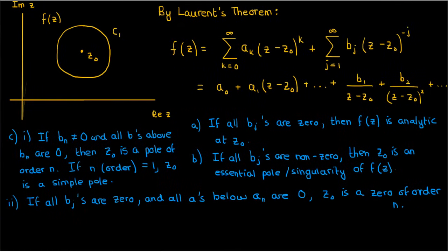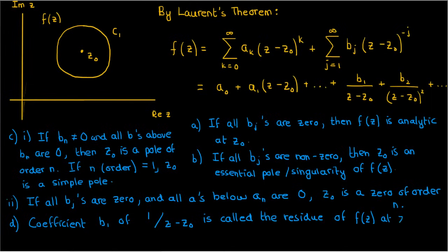Finally, and this is probably the most important definition out of all the ones mentioned so far, the coefficient b1 in the principal part of the Laurent series expansion around z0 is called the residue of f at z0. So that would mean this b1 over here.